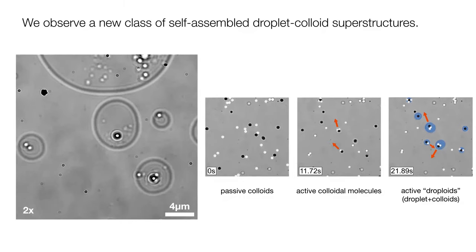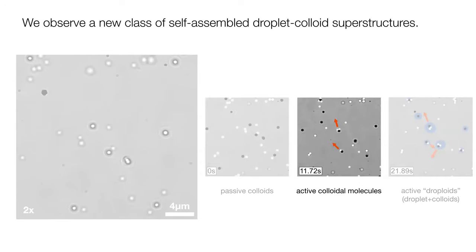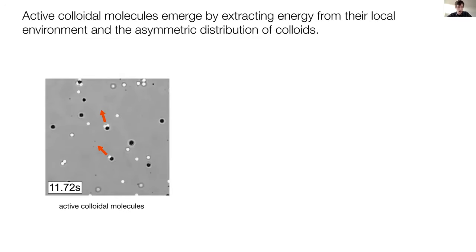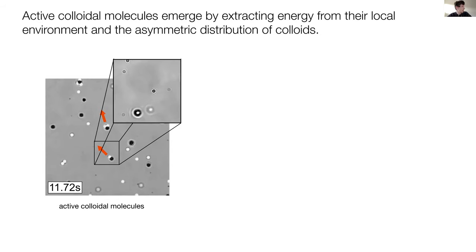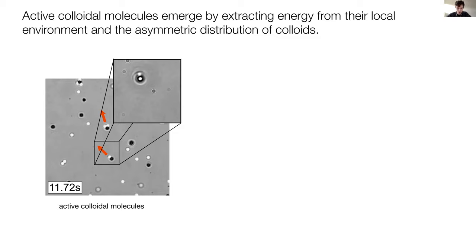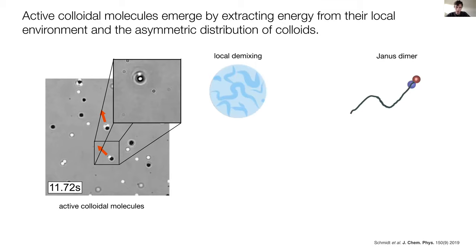Let's take a step back and understand the active colloidal molecules first. As soon as the light is switched on, the two species come together and form a Janus dimer from an absorbing and non-absorbing particle. This breaks the radial symmetry of the absorbing particle and generates motility through the concentration gradient produced by local heating, which leads to local demixing. This local demixing is the representative of our environment.